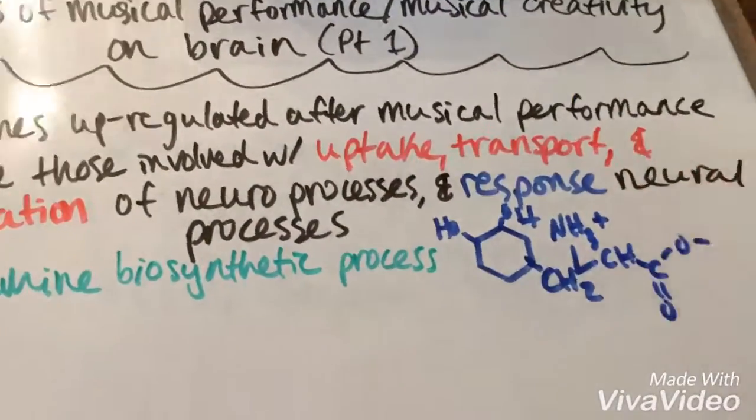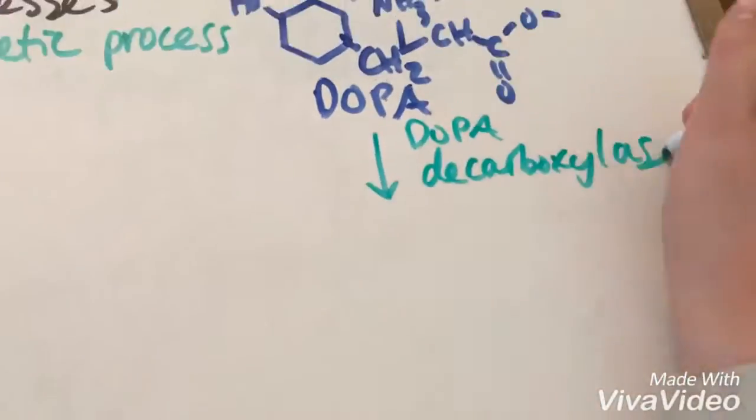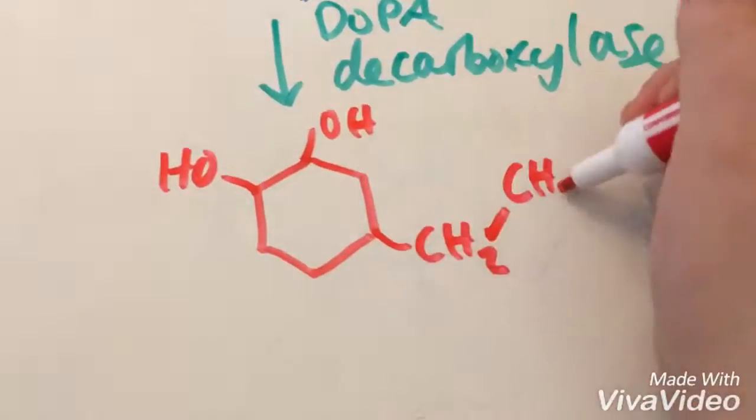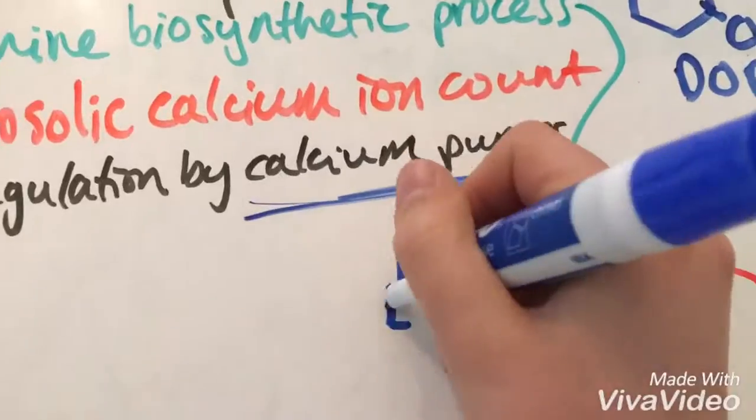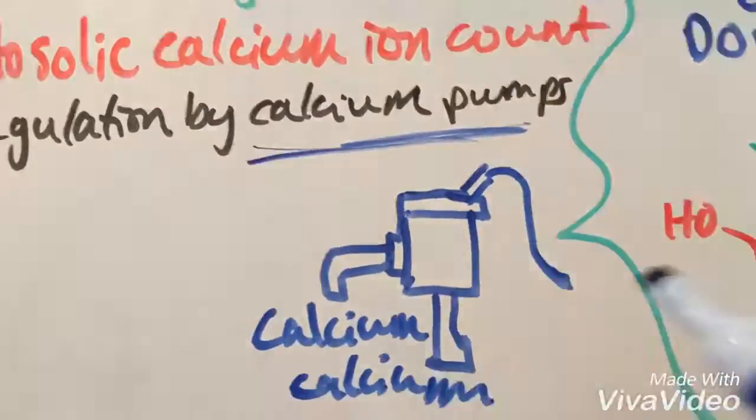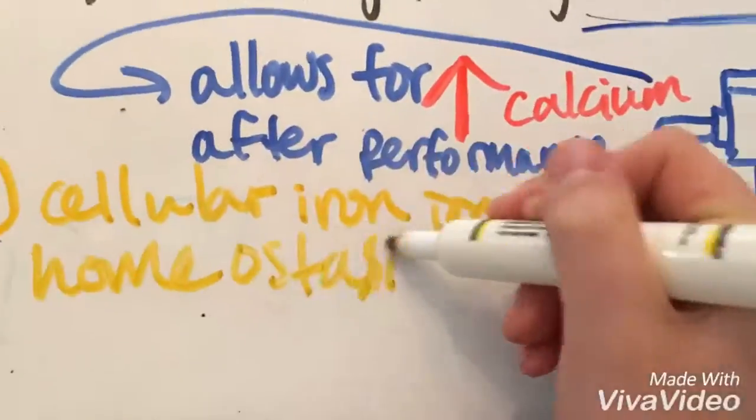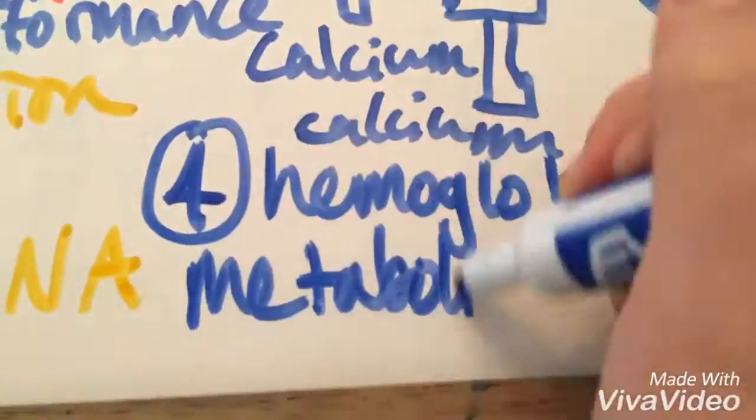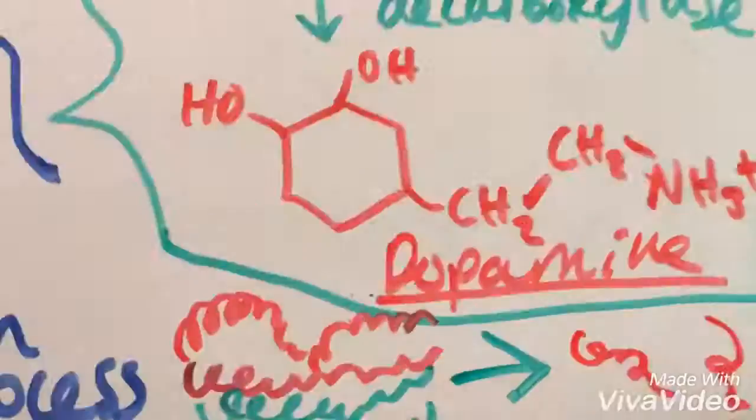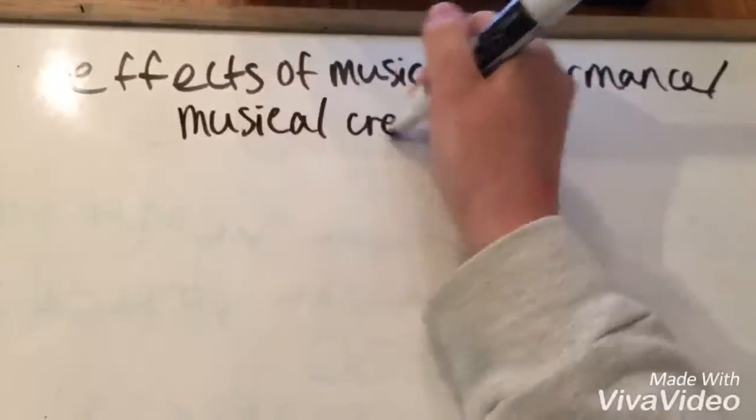This process transfers DOPA and uses the DOPA decarboxylase to transfer DOPA to dopamine. A higher cytosolic calcium ion amount is allowed by calcium pumps that regulate calcium in cells. Cellular ion homeostasis affects DNA and mRNA. Finally, music performance stimulates the hemoglobin metabolic process.